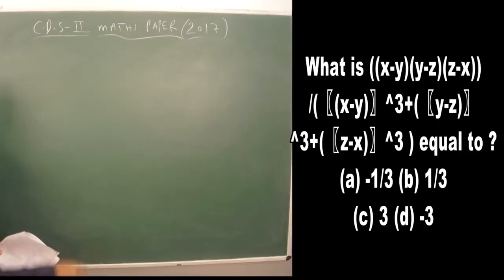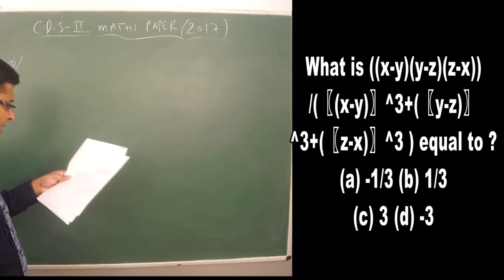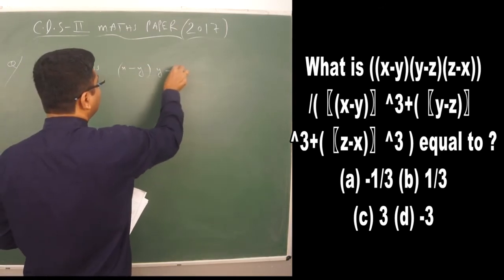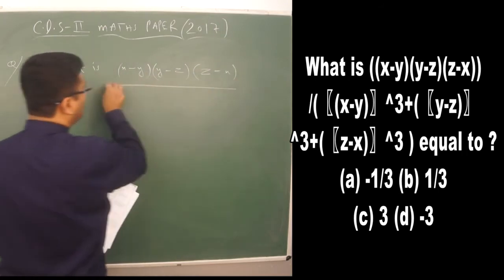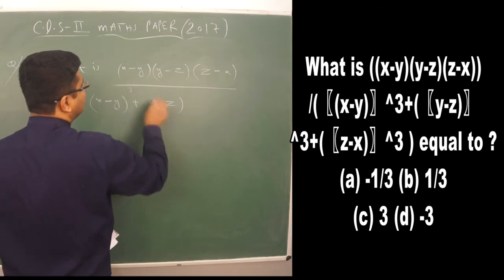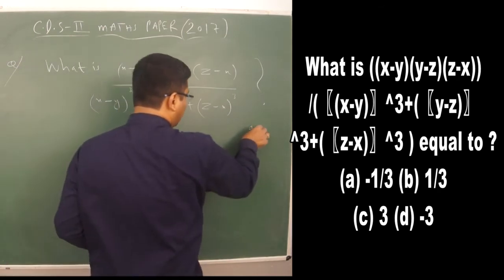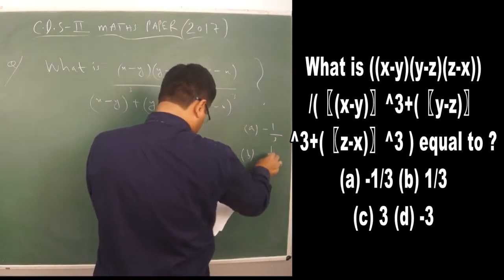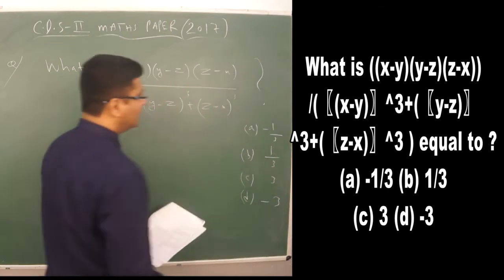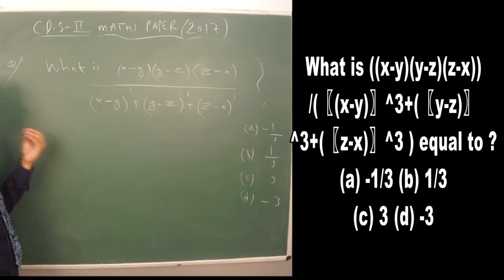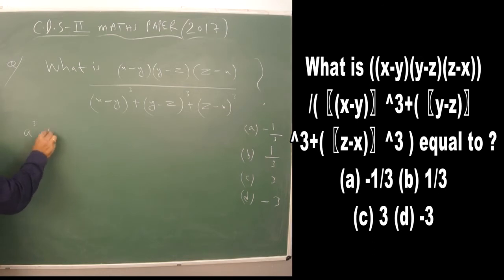The next question is also from number system: find the value of (x−y)(y−z)(z−x) divided by (x−y)³ + (y−z)³ + (z−x)³. The options are −1/3, +1/3, 3, and −3.